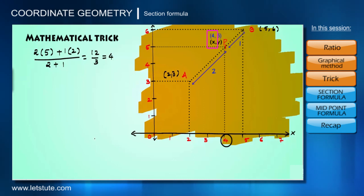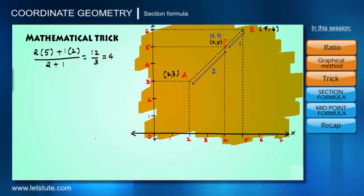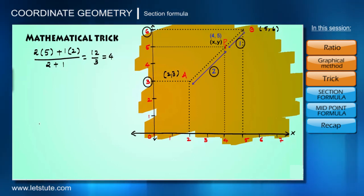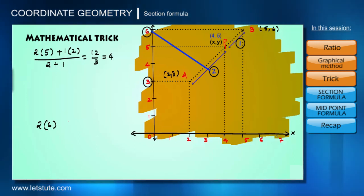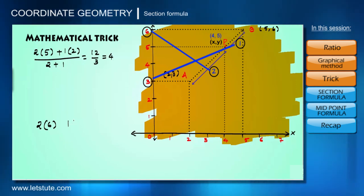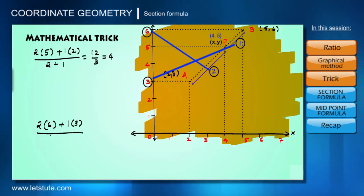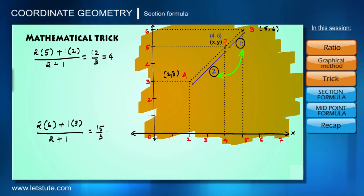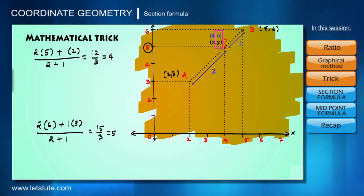Similarly, let's repeat the same process for the Y axis to get the value of Y as 5. Multiply the first part of the ratio, that is 2, with the Y coordinate of the second point, that is 6. Then multiply the second part of the ratio, that is 1, with the Y coordinate of the first point, that is 3. Add them and divide by the sum of the two components of the ratio. We get 15 by 3, that is 5 — the exact value of Y for point P.